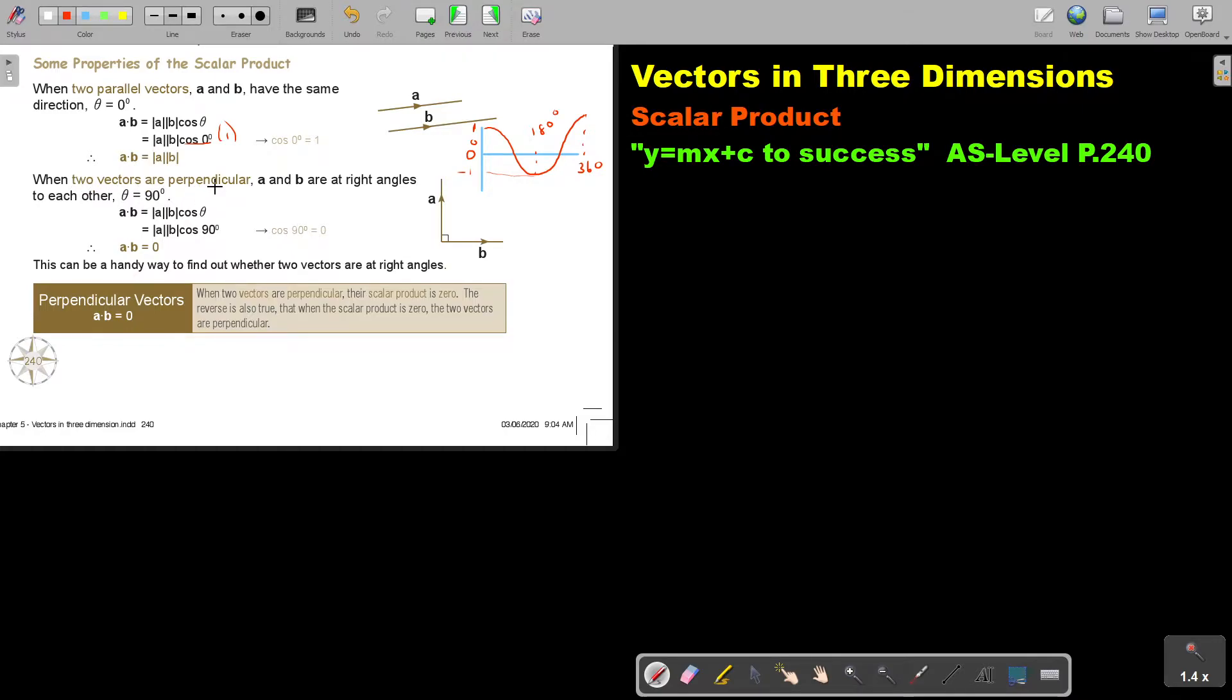When two vectors are perpendicular, A and B are right angles to each other. Now, what is cos 90? There is 90. Let me get another colour. There is 90. So if it's 90 degrees, then what will it be? Zero. So in this place, there will be a zero. And as soon as I multiply that with the magnitude, then it becomes zero.